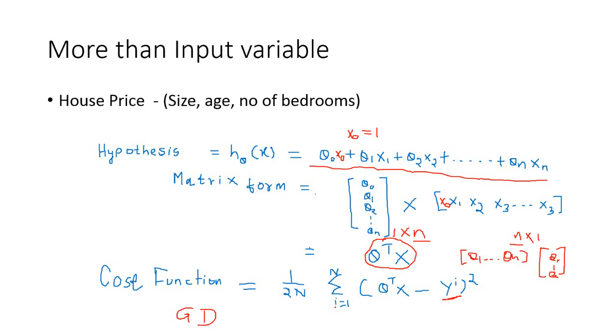So that is about the linear regression with multiple variables. We call it multivariate linear regression. So multivariate is the term used when you have more than one number of variables. So that's the term we use for this.